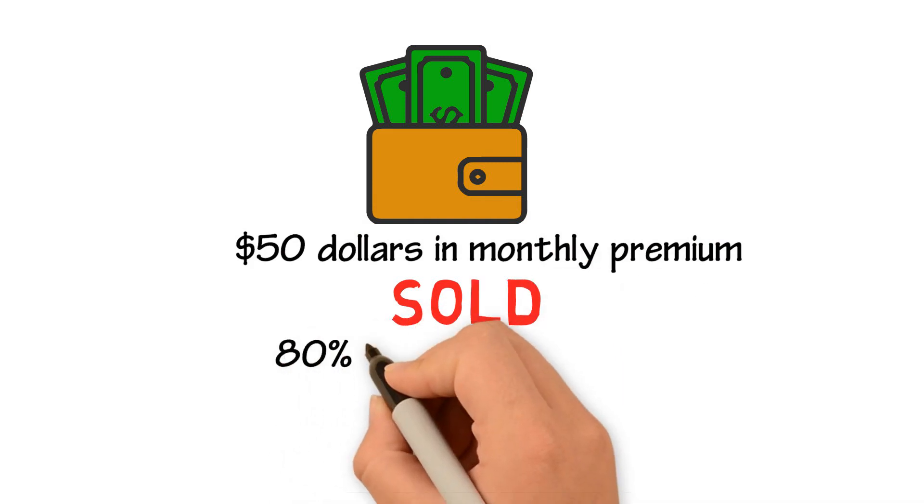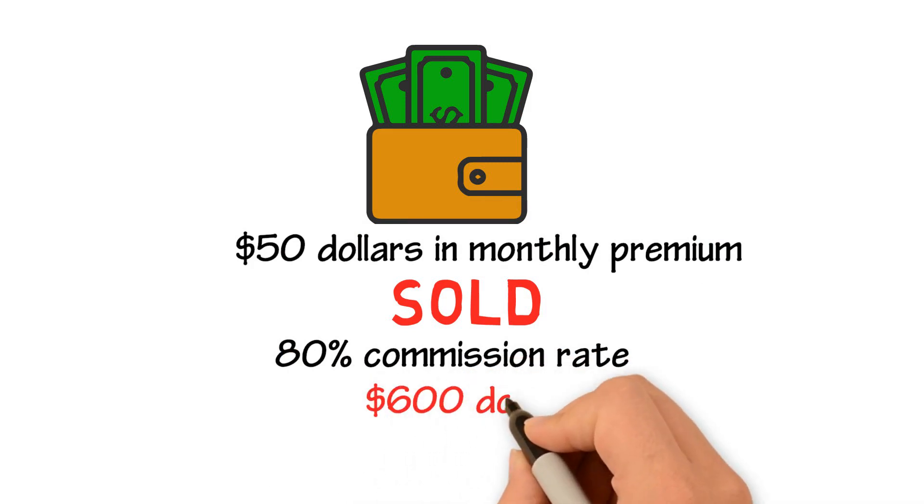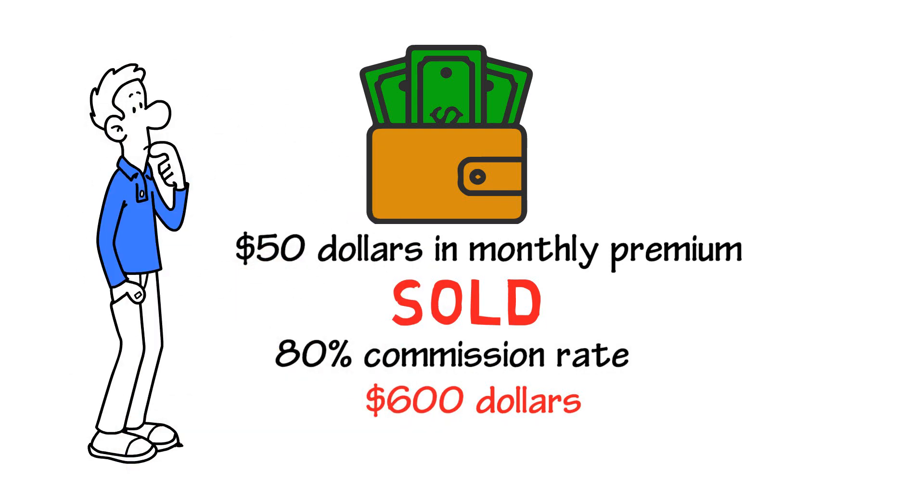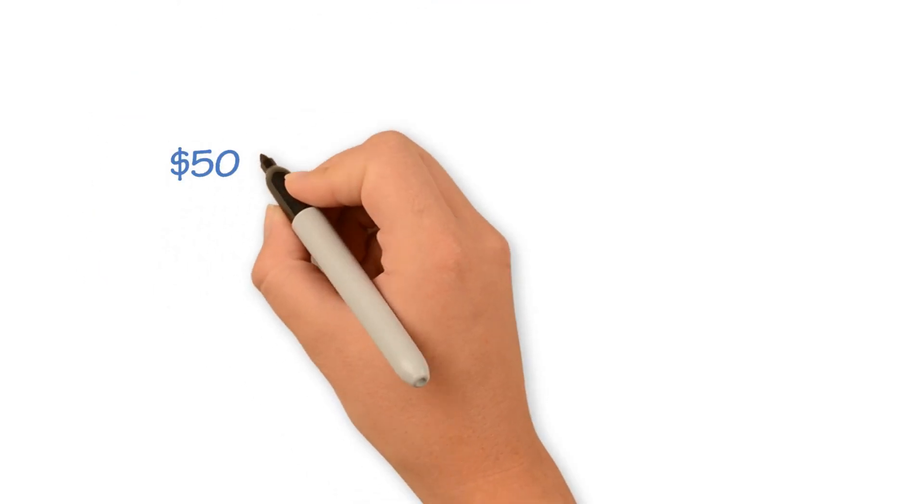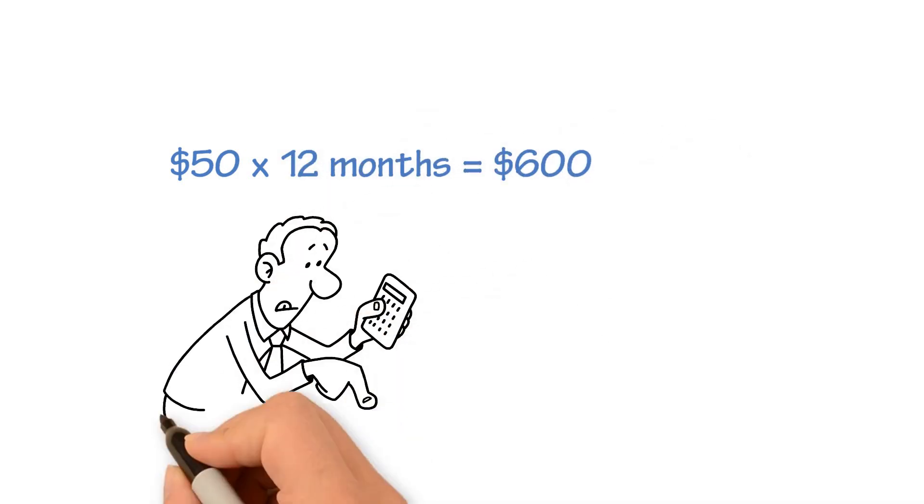And for now, let's just say you're at an 80% commission rate. If we have $50 in monthly premium, then that means we have $600 in annualized premium. You're probably wondering, where did you get that $600 from? It's because $50 times 12 months equals $600. So, $600 is your annualized premium.